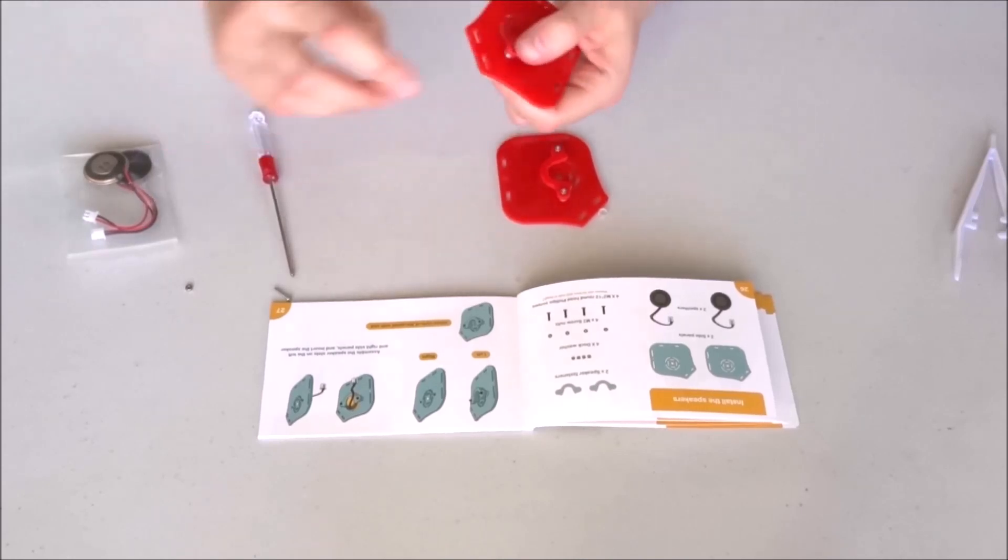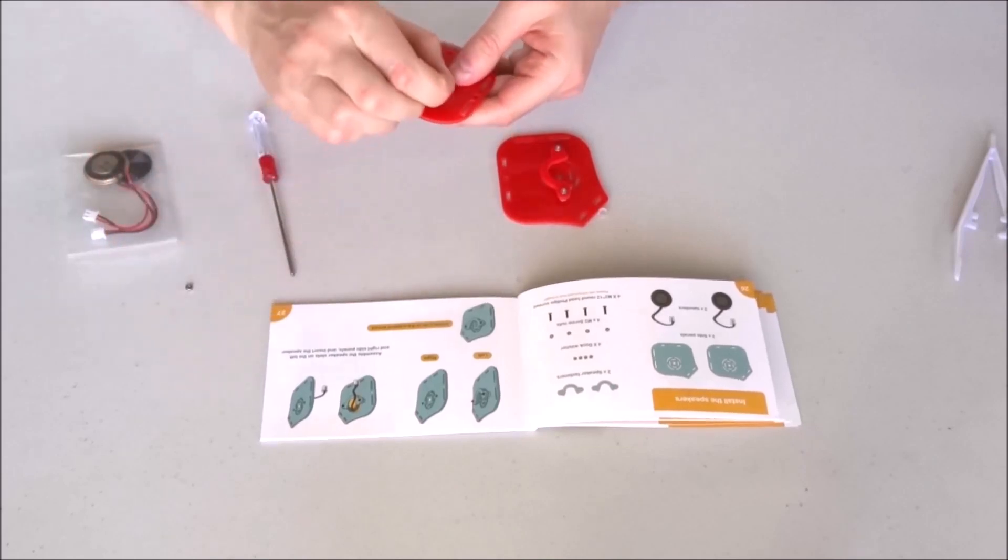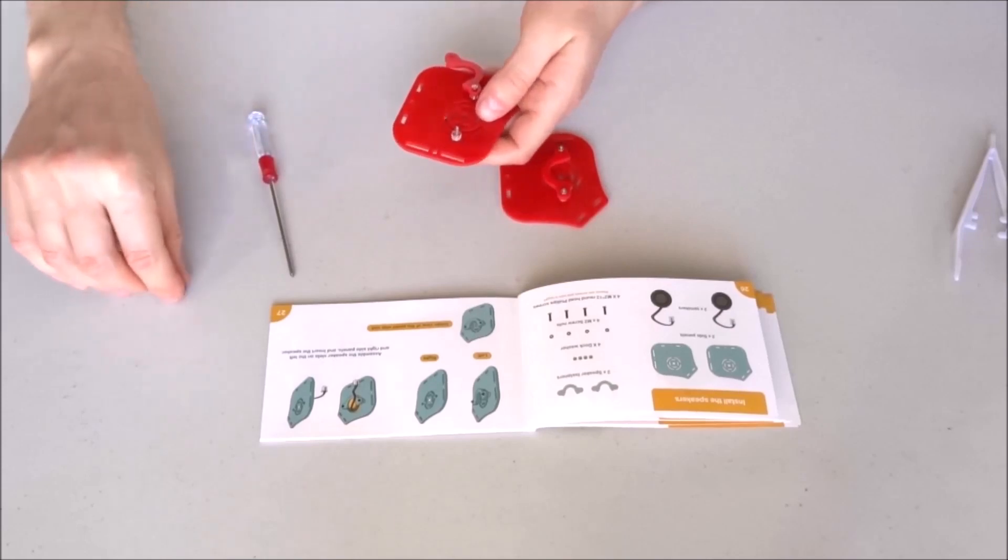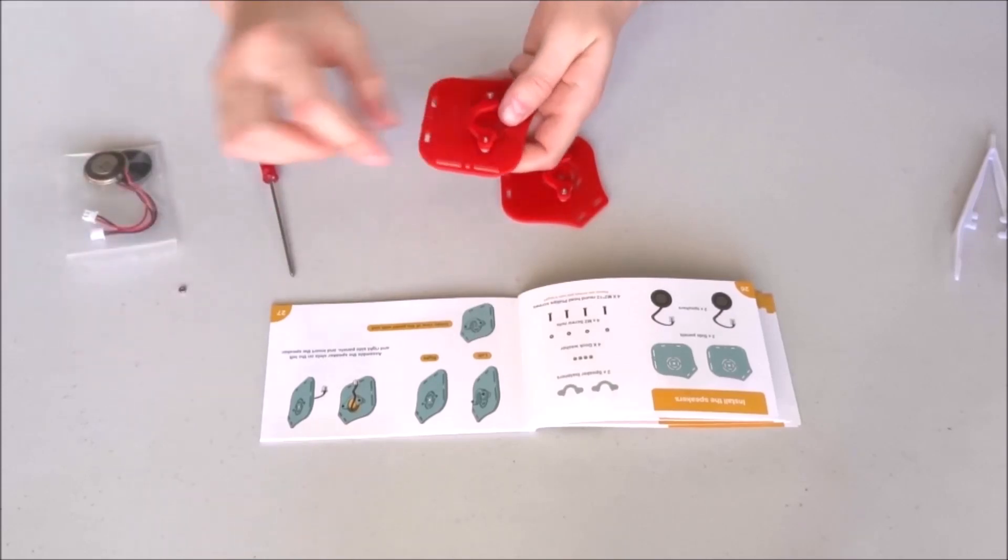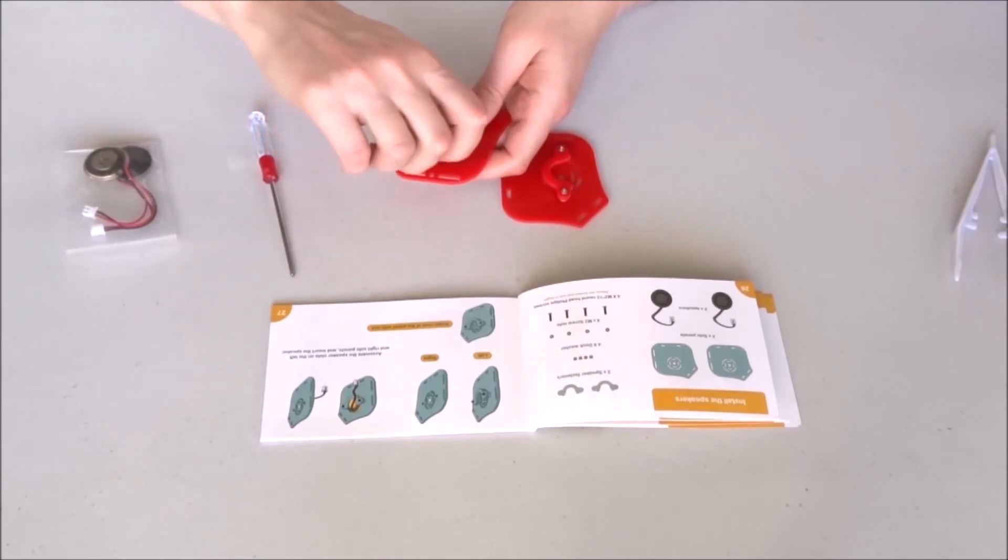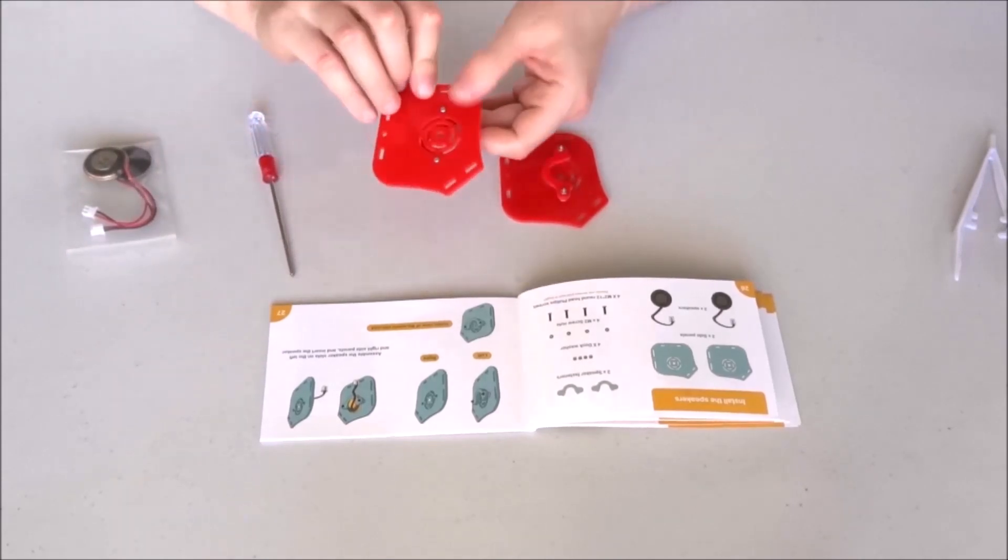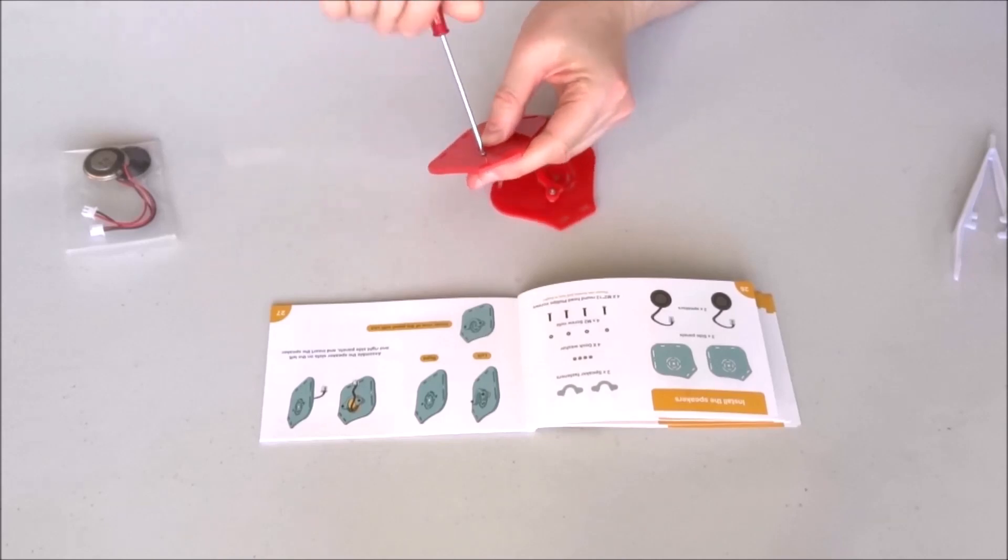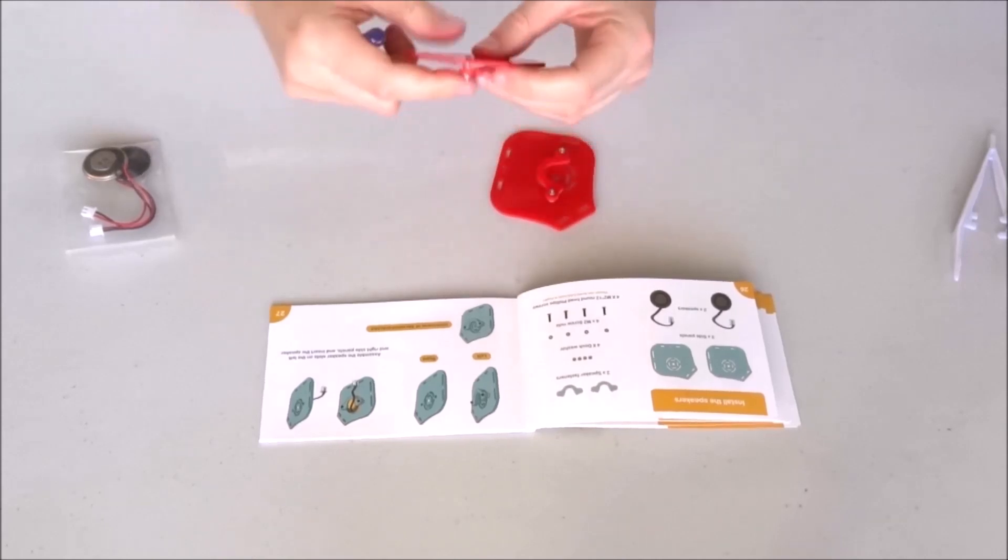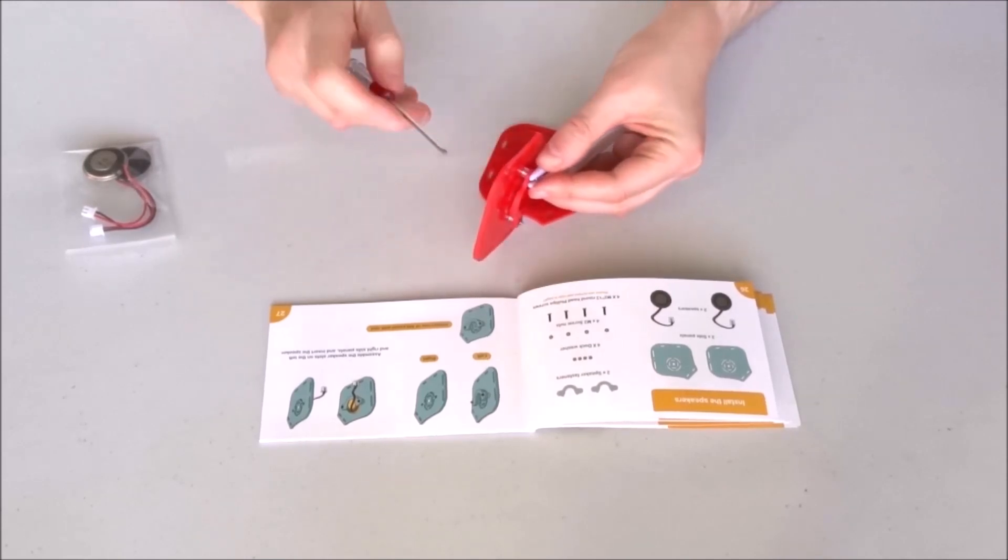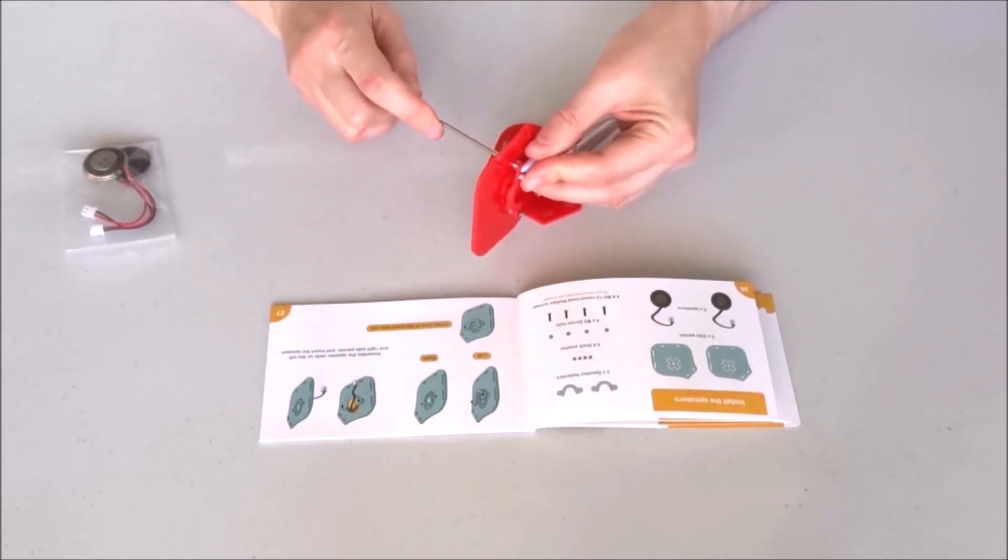Place the nut, leave it loose for now so we can adjust everything. And insert the second bolt. Place the nut. And go ahead and tighten. If necessary, use the tweezers. Place the nut.